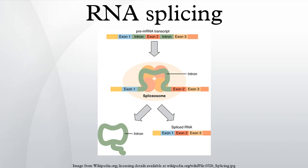Protein splicing: In addition to RNA, proteins can undergo splicing. Although the biomolecular mechanisms are different, the principle is the same: parts of the protein, called inteins instead of introns, are removed. The remaining parts, called exteins instead of exons, are fused together. Protein splicing has been observed in a wide range of organisms, including bacteria, archaea, plants, yeast, and humans.